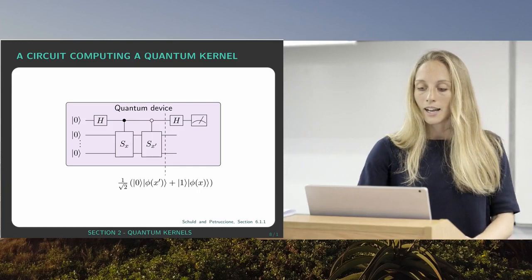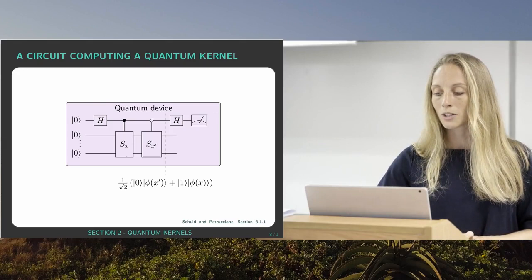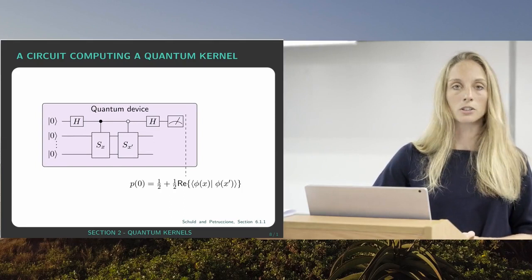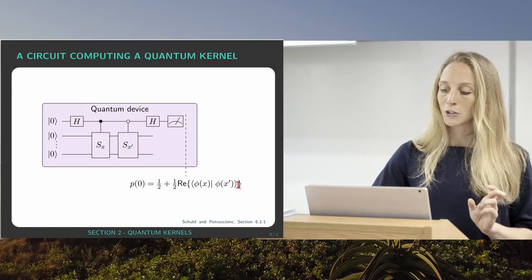And if we now apply a second Hadamard which gets a bit more nasty, we can show that measuring the ancilla we have a probability of measuring the ancilla in state 0 which is exactly one half plus one half times the real part of the overlap. So if the overlap you are looking for or the kernel is actually a real value, you're already done.